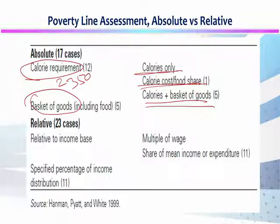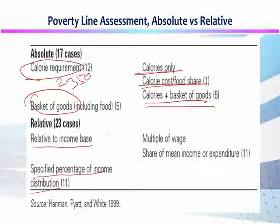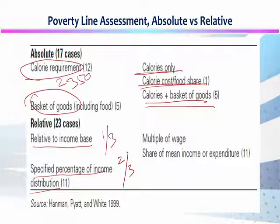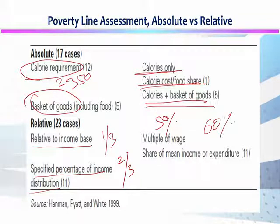Relative poverty में हम relative to income base use कर सकते हैं, and specific percentage of income distribution भी use कर सकते हैं। Sometime हम कहते हैं if anyone is living on less than one third of the income, is considered as relatively poor; sometime two third; sometime 50% per capita income से नیچے۔ جیسے UK میں اگر 60% income سے نیچے رہ رہا ہے تو وہ relatively poor ہوگا۔